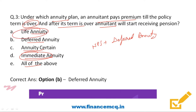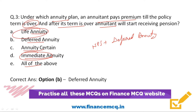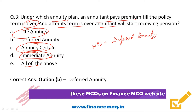Under life annuity plan, the pension is paid till the annuitant's death, and if the with-spouse option is chosen, thereafter his death the pension is paid to the spouse. Annuity certain, also known as guaranteed annuity plan, is opposite to life annuity — here annuity or pension is paid for a specific period and for a specific amount only.